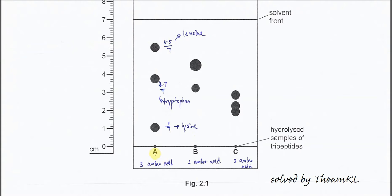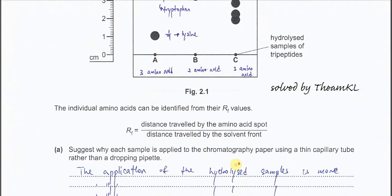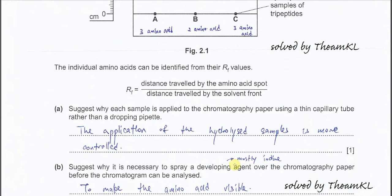Okay, so means for A, we know it's going to have three amino acids. B, two amino acids. C, it's going to have three amino acids. Okay, so this is how to calculate the retention factor or the RF value.